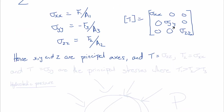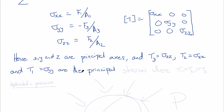By convention, we denote σ_zz as T3 (the third principal stress), σ_xx as T2 (the second principal stress), and σ_yy as T1 (the first principal stress), such that T1 ≥ T2 ≥ T3.